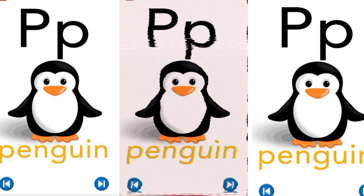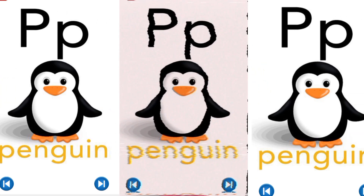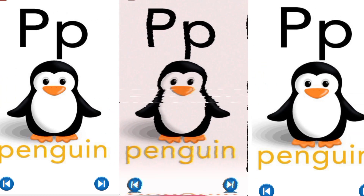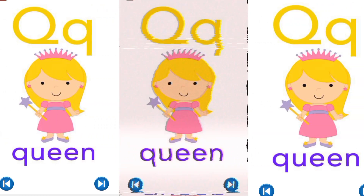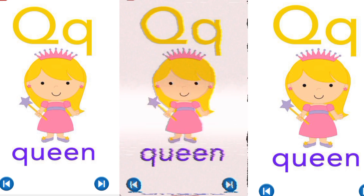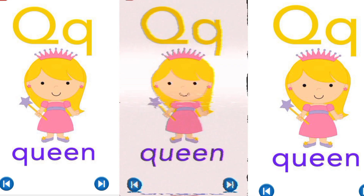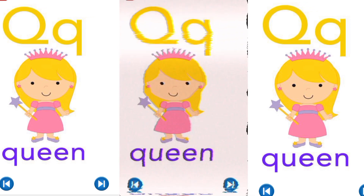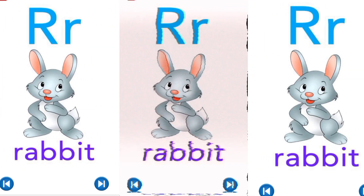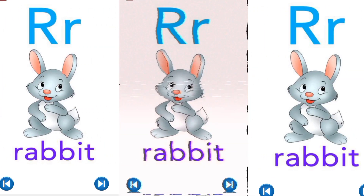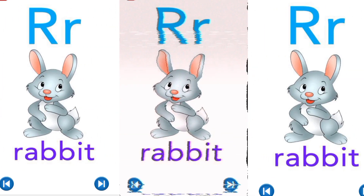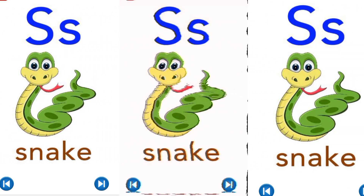P, P for penguin. Q, Q for queen. R, R for rabbit.